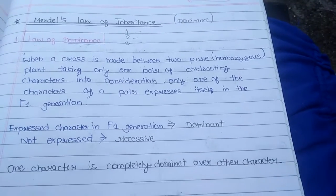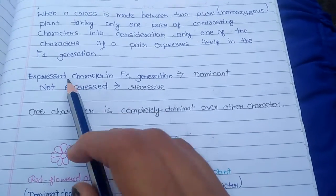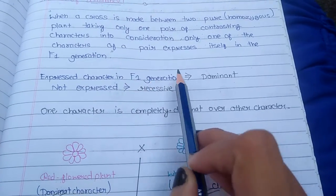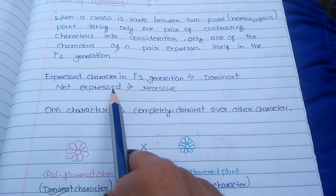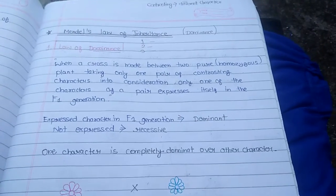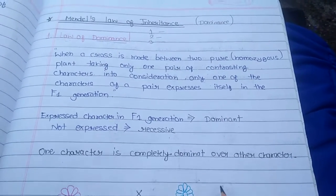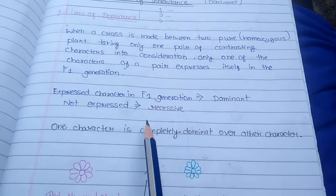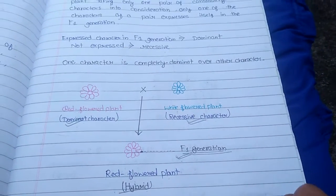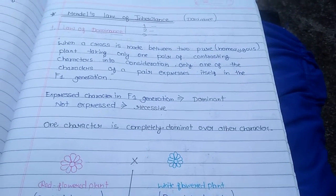This is the First Law. I tried to explain it very well. The F1 generation will show the dominant character, and the recessive character will not express itself. This is the First Law of Dominance. If you like it, share and comment. Thank you.